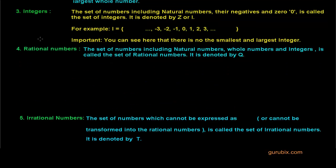Let us try to understand integers. The numbers which include natural numbers, their negatives, and 0 are called the set of integers. It is denoted by capital Z or capital I. For example, I is the set of numbers from minus infinity to positive infinity, because this means we cannot find the smallest or the largest integer.